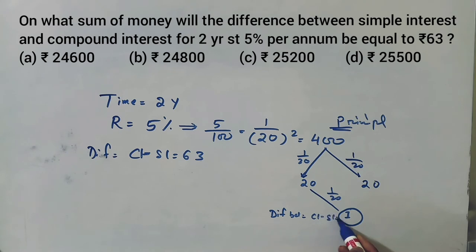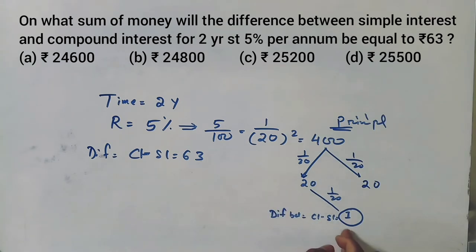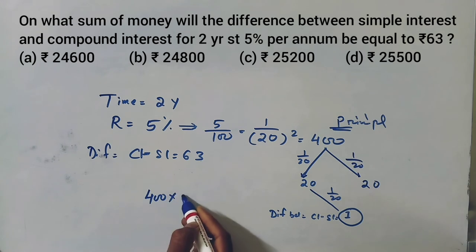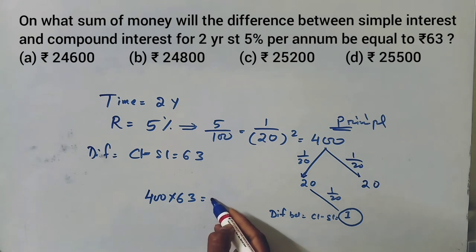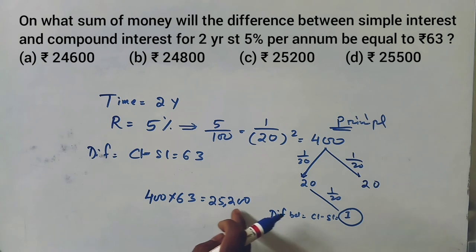1 value is 63, 4 value is 63, equal to 25,200. Okay, 4, 4, 24, 25,200.